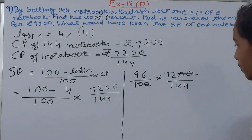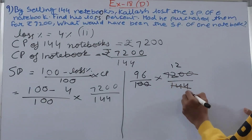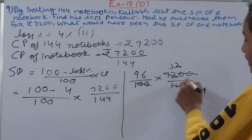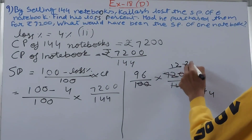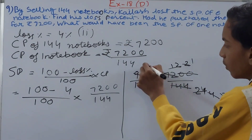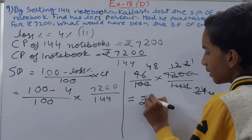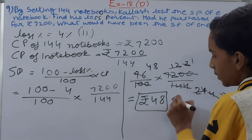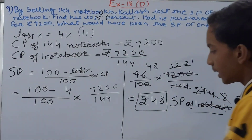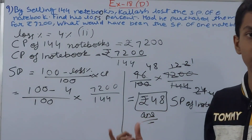Solving: 96/100 × 7200/144. Cancel the two zeros: 96 × 72/144. Divide 72 and 144 by 6: gives 12 and 2, so 96 × 12/2 = 96/2 × 12? Simplifying further by cancelling 96 and 2: 48 × 1 = Rs. 48. So the SP of one notebook would have been Rs. 48.